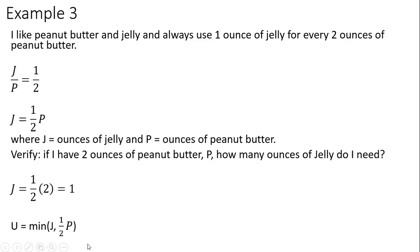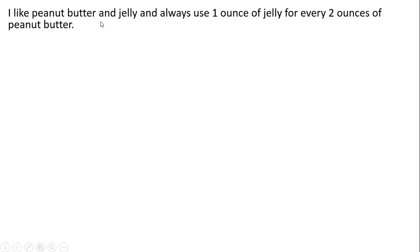Let me just show one more thing with this example. Same word problem: one ounce of jelly for every two ounces of peanut butter. So we get the ratio here again of those two goods of one-half. And we solved it for J.